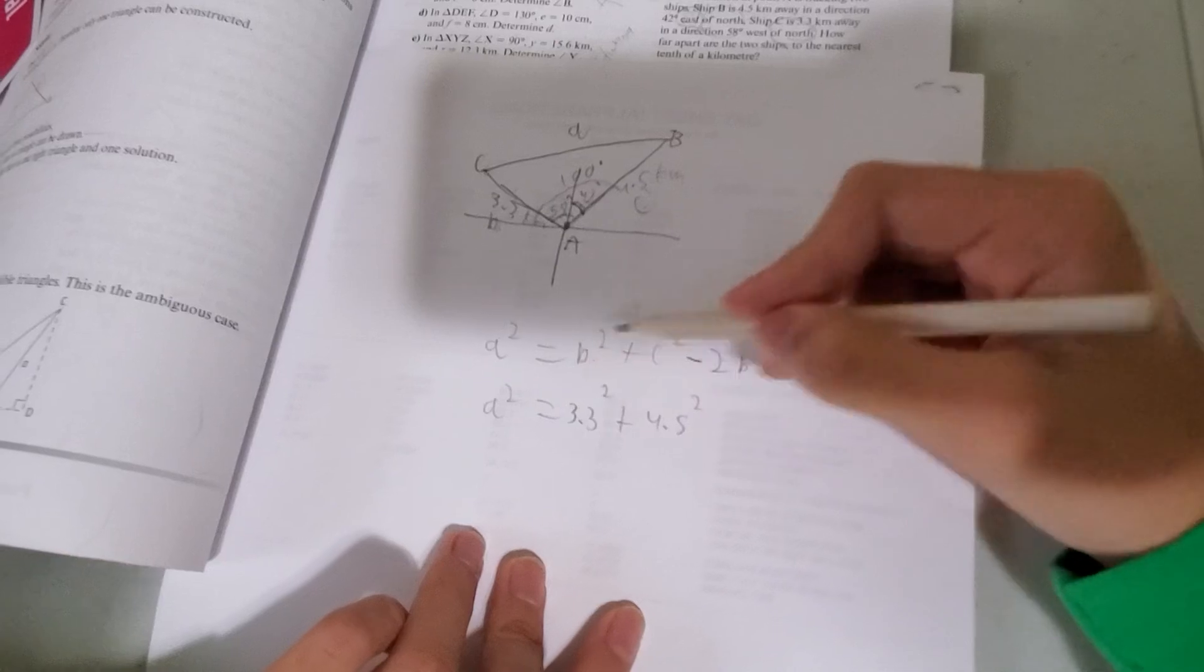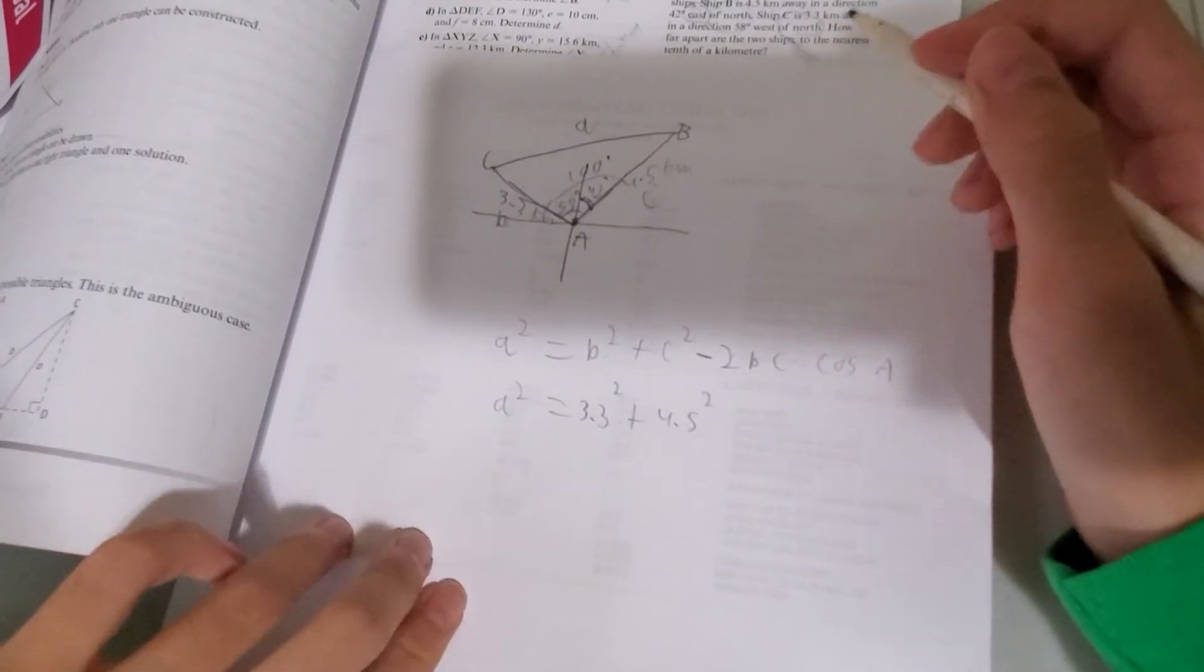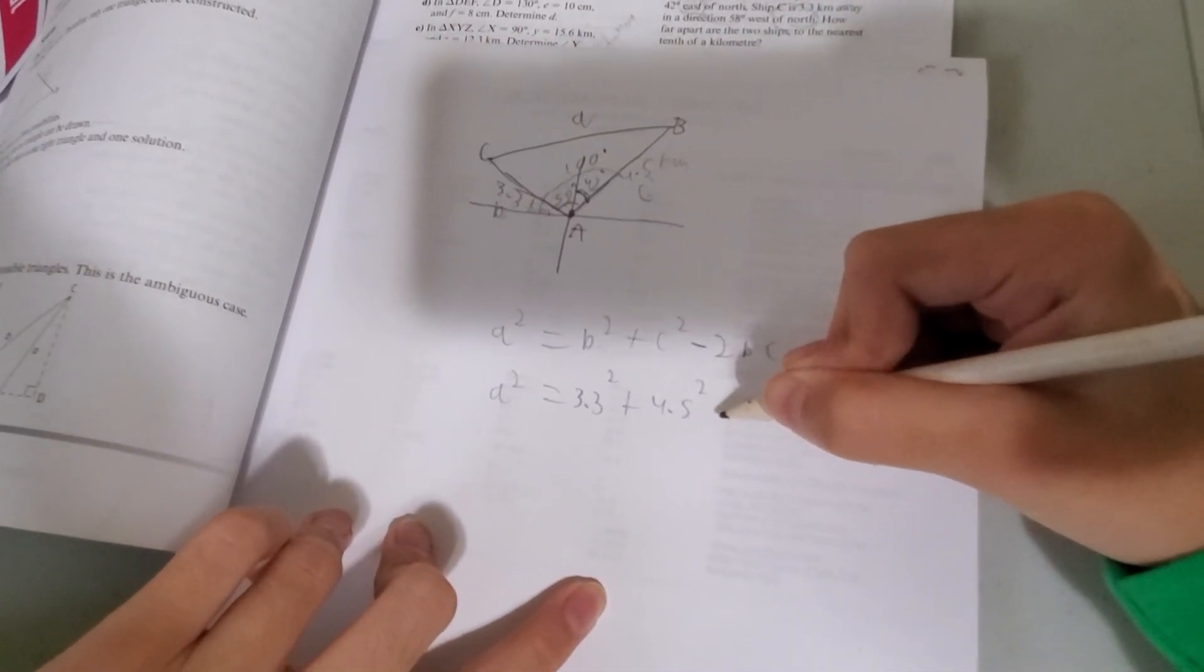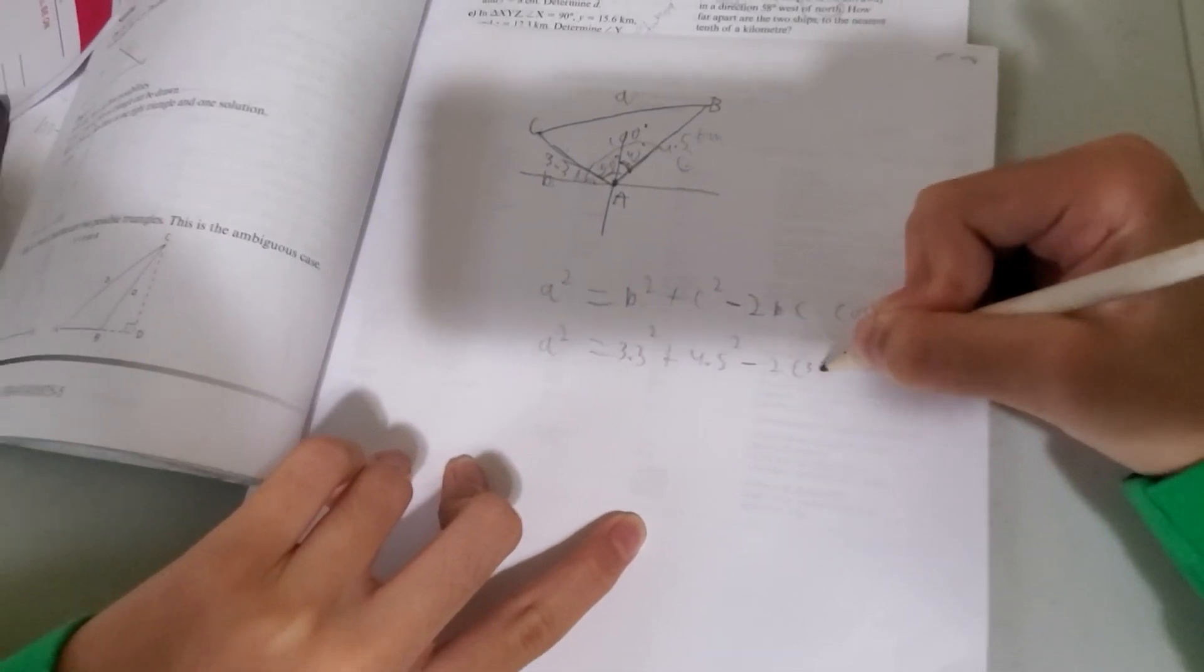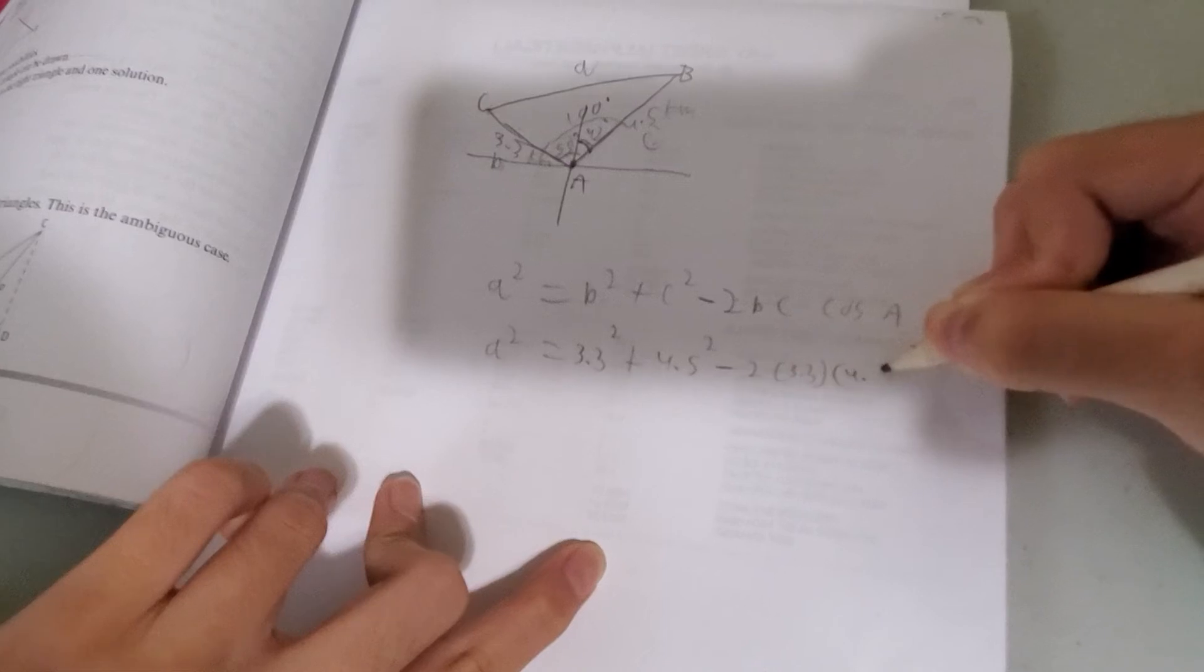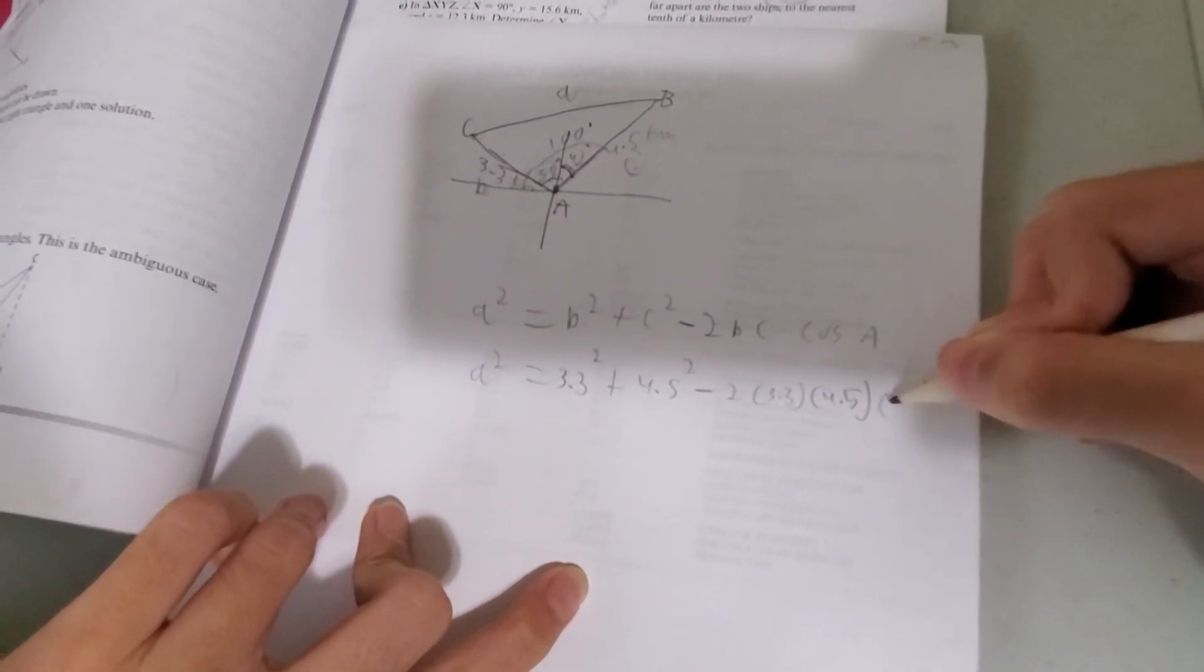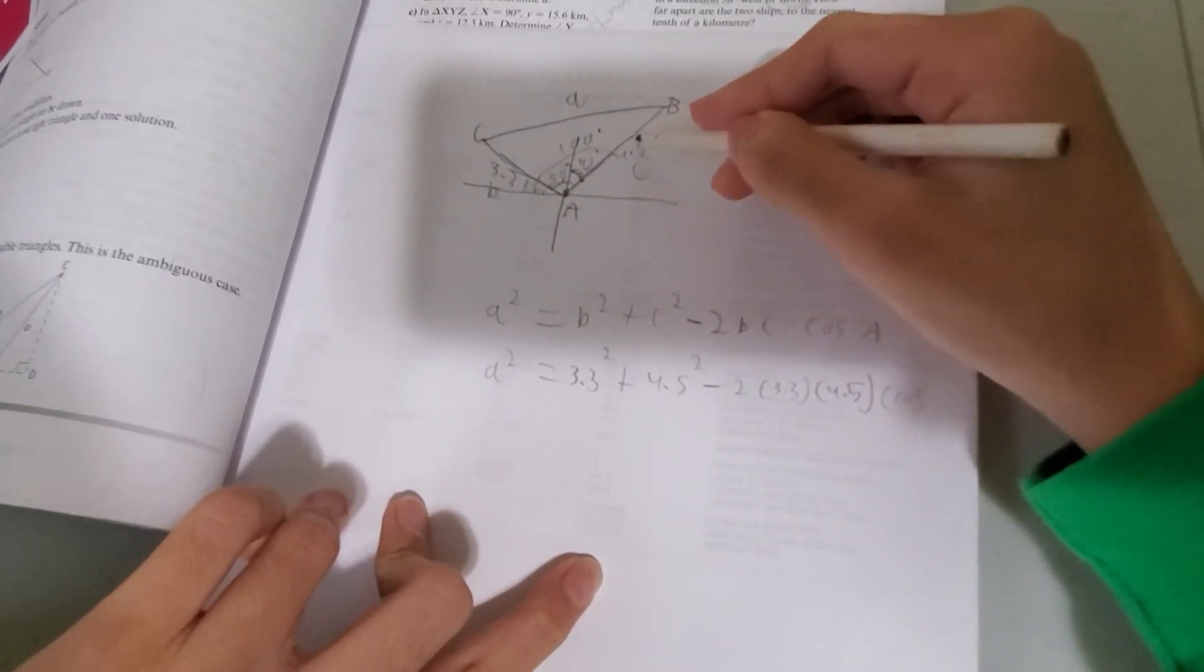And by the way, B and C, these two adjacent sides, can be inversed. Minus 2 times 3.3 times 4.5 times cos of the angle, which in this case is 100 degrees.